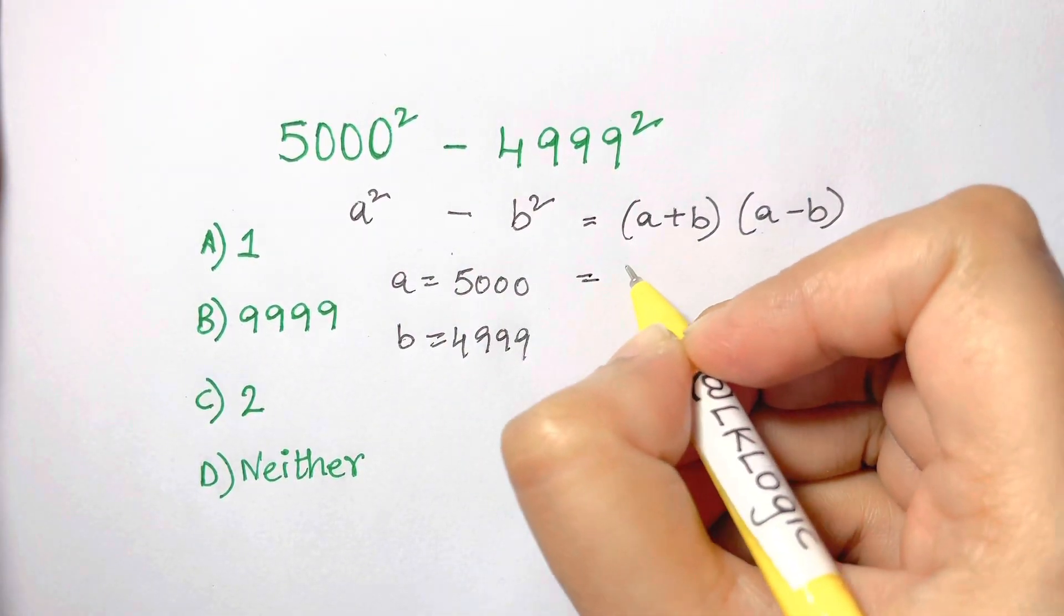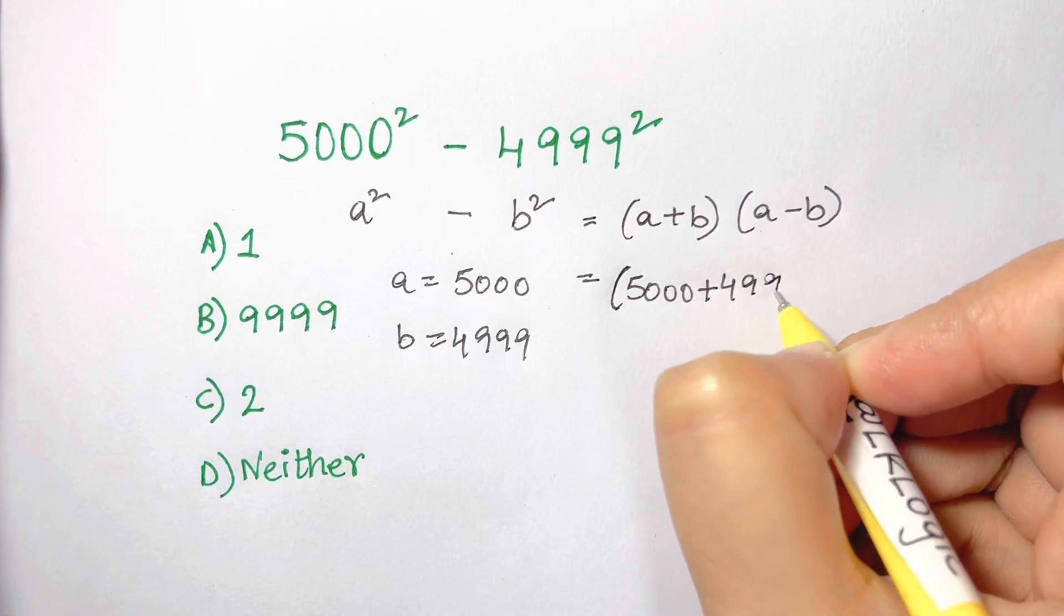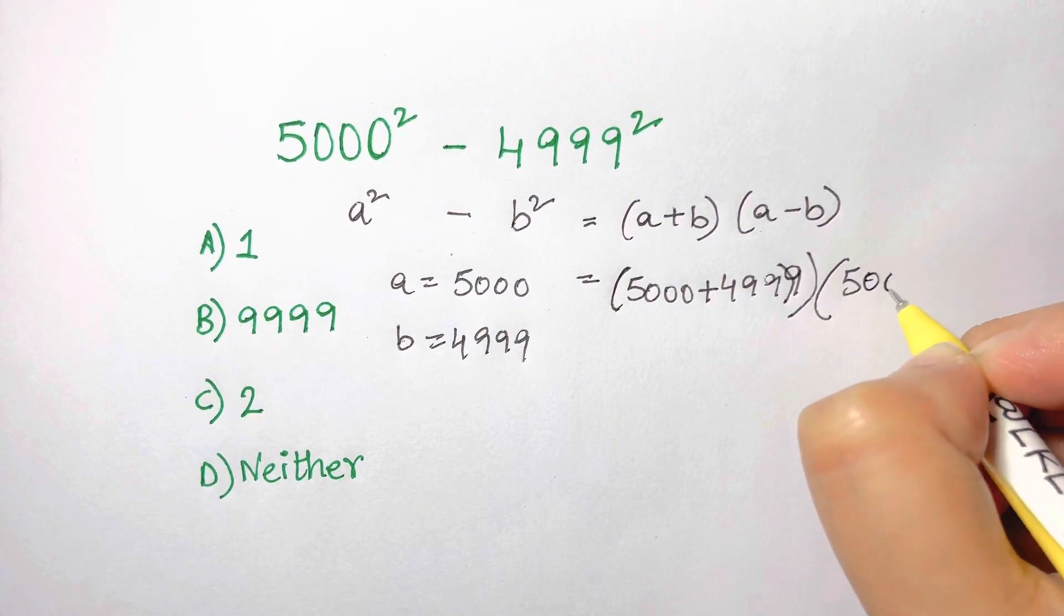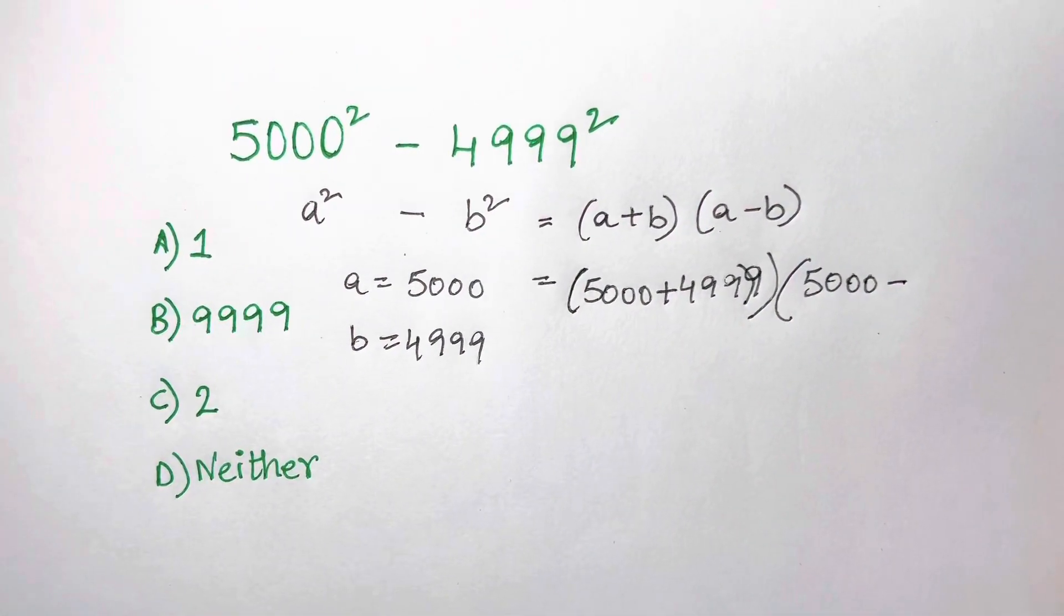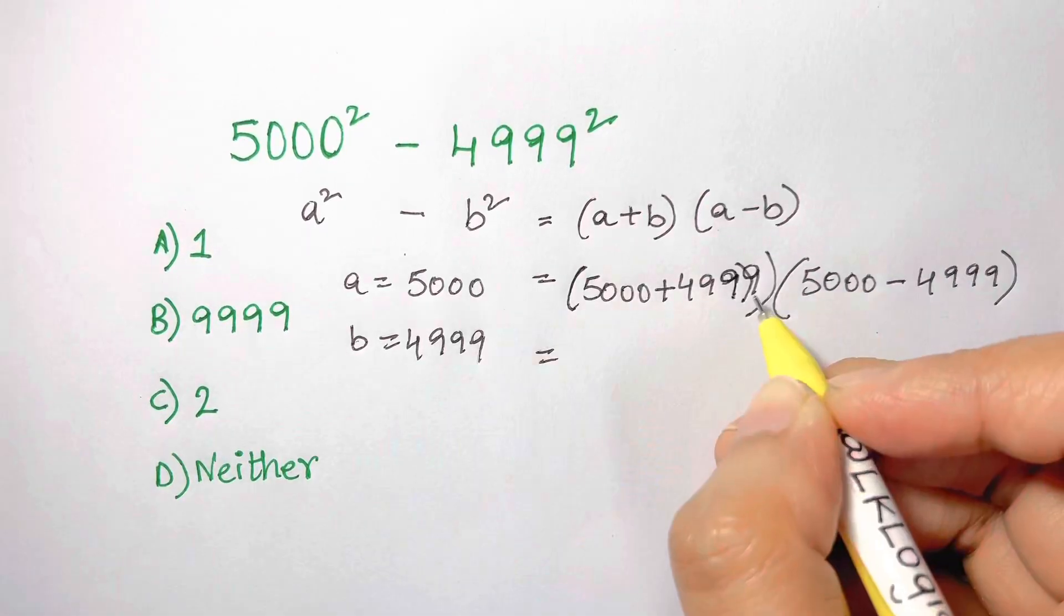Now let's substitute into this. So we have 5000 plus 4999 times 5000 minus 4999.